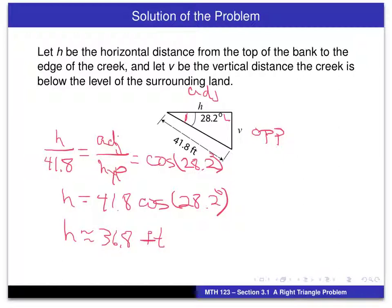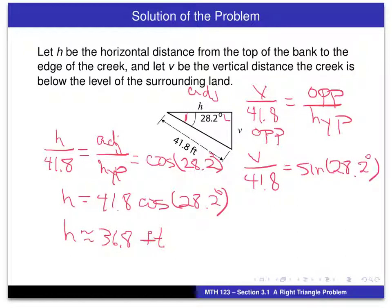I rounded that off to the nearest tenth of a foot because our other measurement was basically given in a tenth of a foot, 41.8 feet. Now to get that vertical distance, it's effectively the same type of computation. The only difference is if we look at V over 41.8, we have the opposite side over the hypotenuse, so we can say V over 41.8 is the sine of 28.2 degrees. Or V equals 41.8 times the sine of 28.2 degrees. This is where we take out our calculator and get an approximation for that. Rounding to the nearest tenth, we get 19.8 feet.